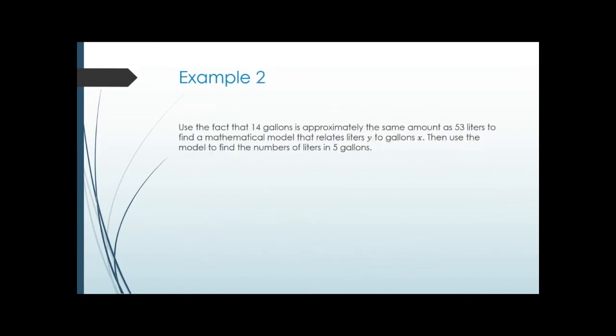Example two: use the fact that 14 gallons is approximately the same as 53 liters to find a mathematical model relating liters y to gallons x, then use the model to find the number of liters in 5 gallons. Since 14 gallons is about 53 liters, they're proportional, so we assume direct proportion. Reading left to right: 14 gallons is x, 'approximately' is our equals, so x equals k times y.